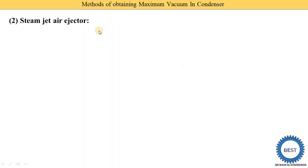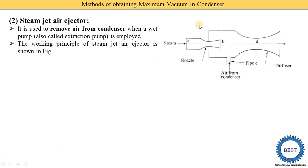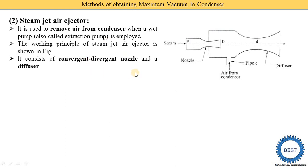The second method is steam jet air injectors. By using the steam jet we remove the air from the condenser — this is called the steam jet air injector. It is used to remove air from the condenser when a wet pump is used. The working principle of the steam jet air injector is shown in this figure.